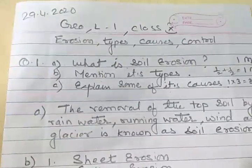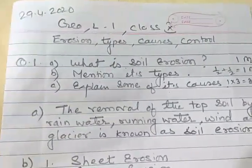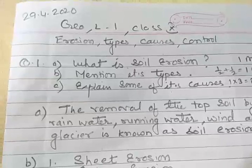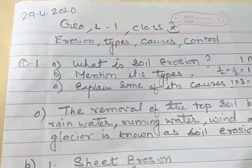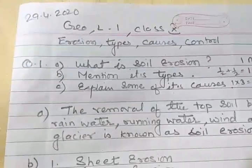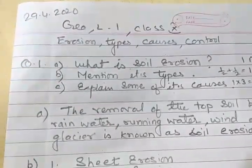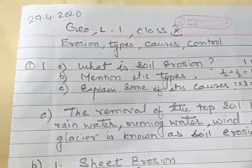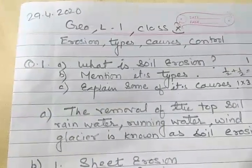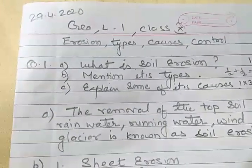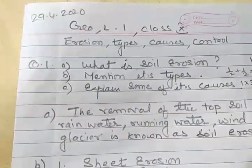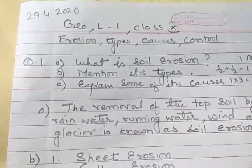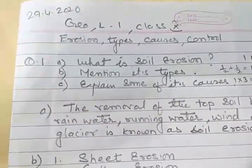Good morning students. Today I am going to teach you geography lesson 1 for class 10 — the resources, soil and resources chapter. The topic is erosion, its types, causes, and how we can control soil erosion.